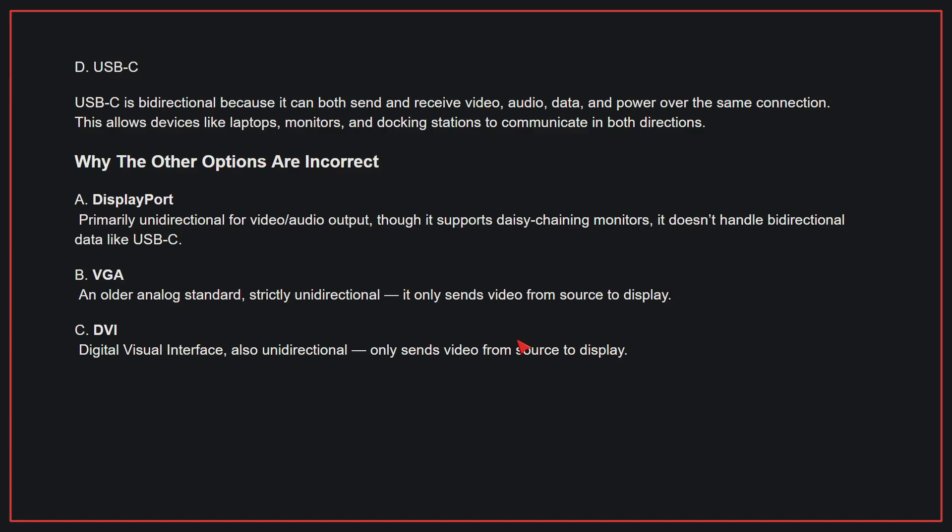Why the other options are incorrect: A, DisplayPort — this is primarily unidirectional for video and audio output; though it supports daisy-chaining monitors, it doesn't handle bi-directional data like USB-C. B, VGA — this is an older analog standard, strictly unidirectional, only sending video from source to display. C, DVI — also unidirectional, only sends video from source to display. Therefore, the correct answer is D.